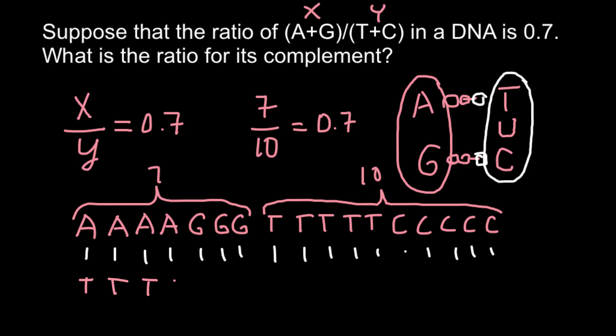5 thymines, 2 cytosines, 5 adenines, and 5 guanines. So the ratio would be reversed. This time we have Y on top and X on the bottom. So we have to divide 10 by 7, and our answer would be 1.43. And this is going to be our answer today.